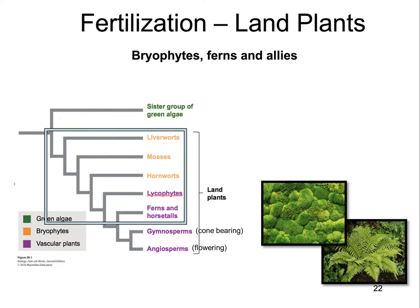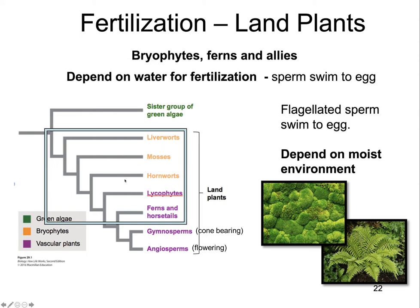Bryophytes and ferns depend on water for fertilization because they only produce sperm, and those sperm have to swim to the egg. The sperm have a little flagella on them and need water to swim through to reach an egg. That means they're really dependent on being in very moist habitats. If there's not water readily available in the environment, the sperm won't be able to fertilize.